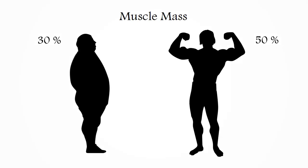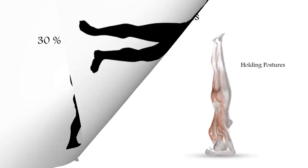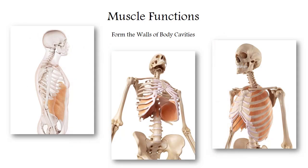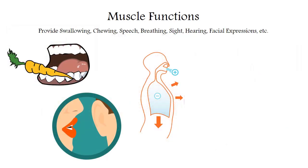What functions do our skeletal muscles perform? They provide all the variety of movements and retention of various postures. They form the walls of certain body cavities — for example the walls of the chest, abdominal, pelvic and oral cavities are largely formed by muscles. They also participate in the work of some internal organs, and thanks to them we can chew, swallow, breathe and speak.